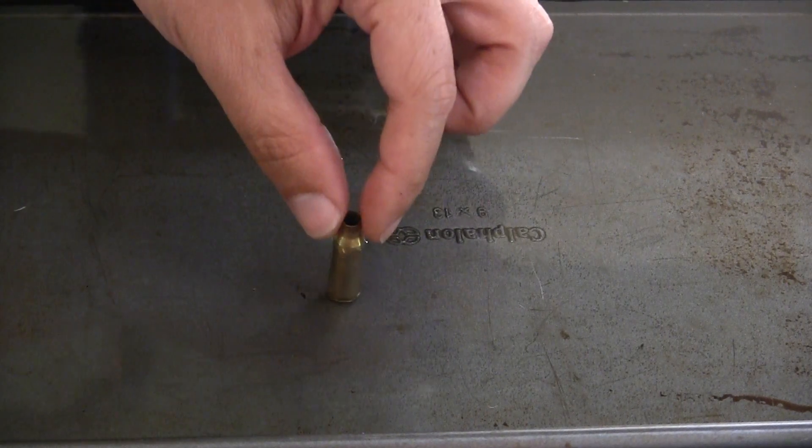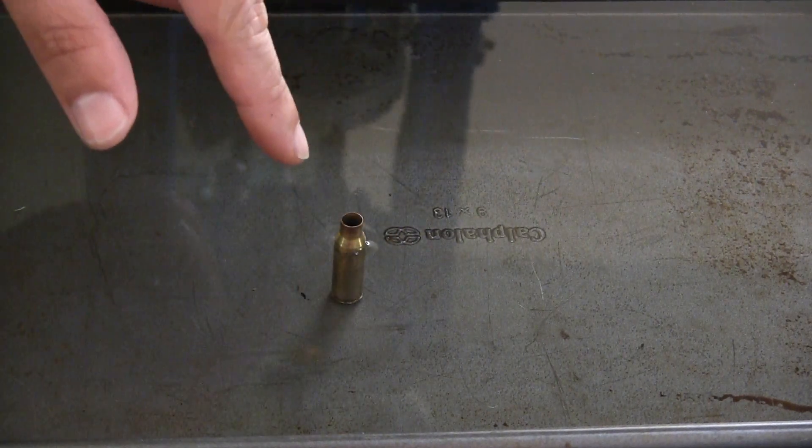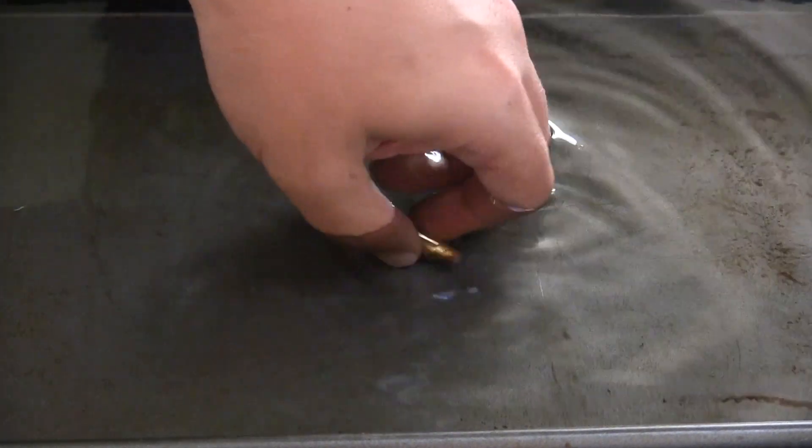In this video, we're going to show you a couple quick and easy ways to anneal brass. The common way is to just heat the top of the case mouth and then tip it over into water.